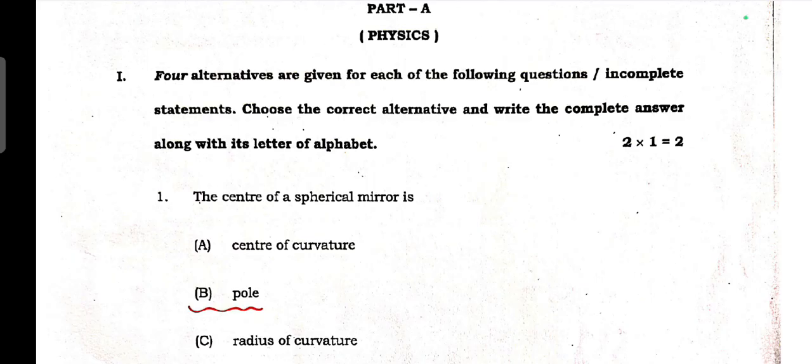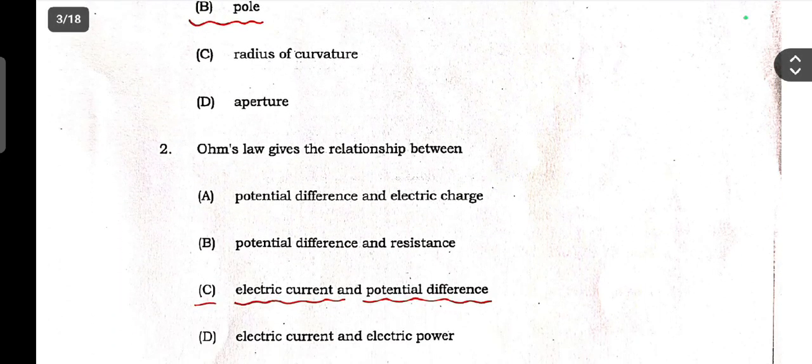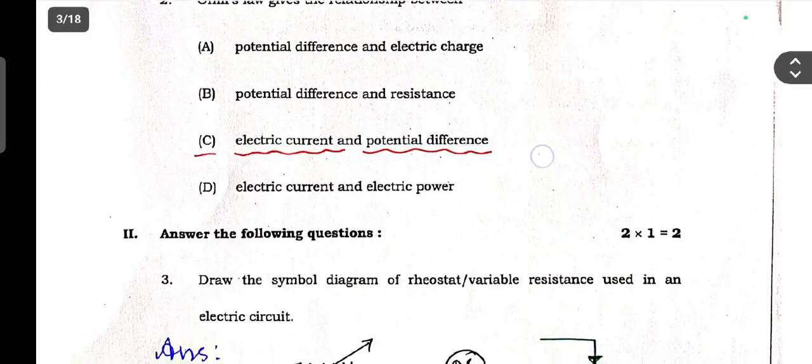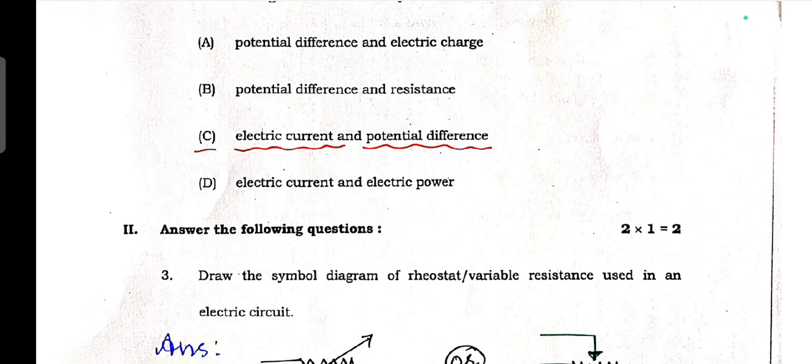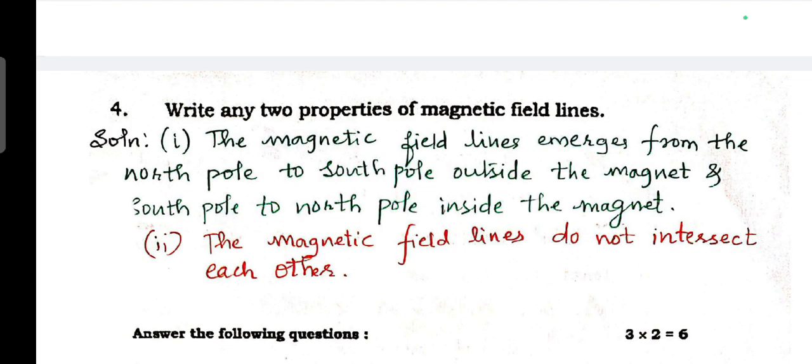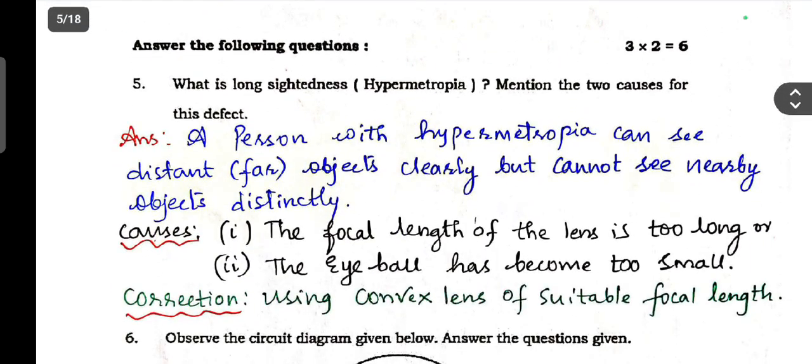First part, Part A - two multiple choice questions, each carries one mark. The center of a spherical mirror is - answer is B, pole. Ohm's law gives the relationship between - answer is C, electric current and potential difference. Next, answer the following questions - one more question, two more questions will be there, each carries one mark. Draw the symbol diagram of rheostat or variable resistance used in the electric circuit. This is the answer. Next question number four, write any two properties of magnetic field lines. This is the answer. If you want to answer, take screenshot.